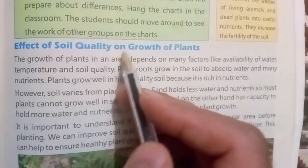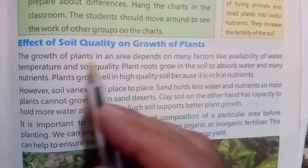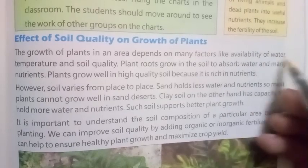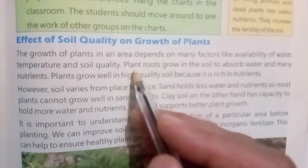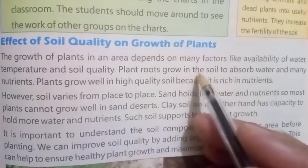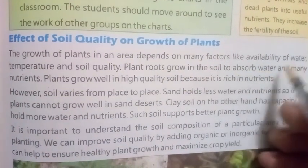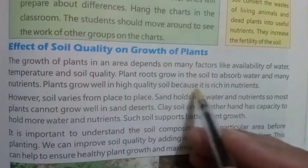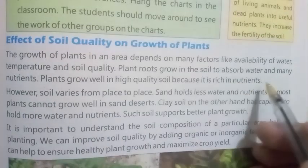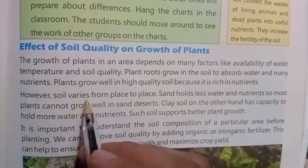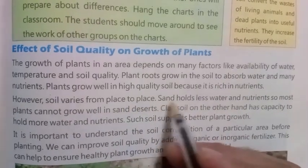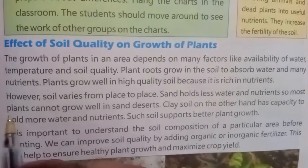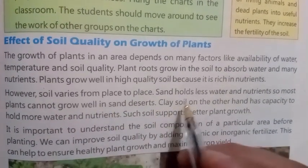Number five: Effect of Soil Quality on Growth of Plants. The growth of plants in an area depends on many factors like availability of water, temperature, and soil quality. Plant roots grow in the soil to absorb water and many nutrients. Plants grow well in high quality soil because it is rich in nutrients. However, soil varies from place to place. Sand holds less water and nutrients, so most plants cannot grow well in sand deserts.